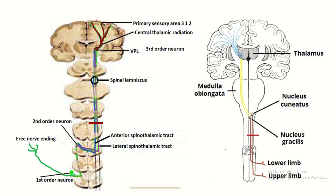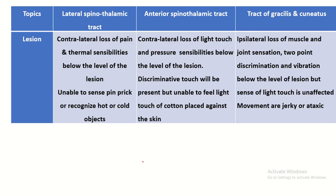What are the lesions of the tract of gracilis and cuneatus? Lesions are always ipsilateral, but in the case of other sensory tracts, the lesion is contralateral. In a lesion of this tract there is ipsilateral loss of muscle and joint sensation, two-point discrimination, and vibration below the level of the lesion. However, the sensation of touch is unaffected.